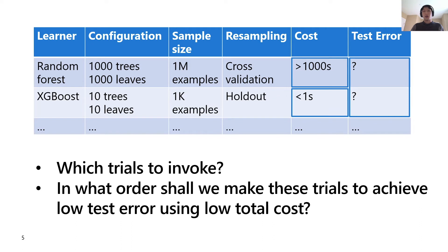Intuitively, the order of trying these choices has a huge impact on the search cost. We need to avoid unnecessary expensive trials to save the total cost, but we also need to perform such expensive trials early enough if they are indeed required.